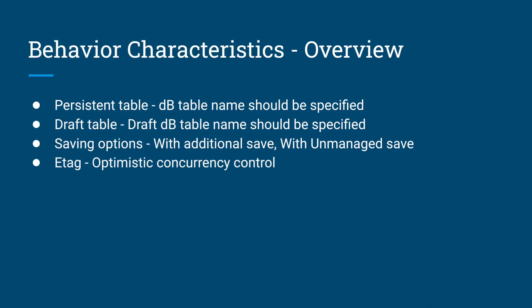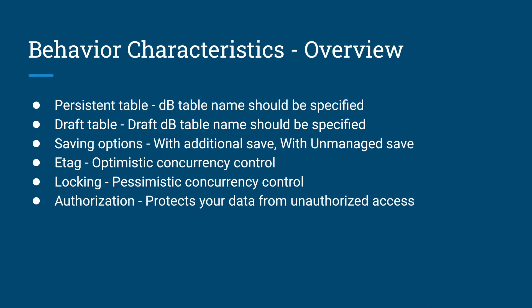ETag is an optimistic concurrency control which avoids modification of data that is being controlled by multiple users simultaneously. Locking is a pessimistic concurrency control that avoids concurrent access to database table records. With ETag, an ETag field is compared when a change request comes in — if the field matches, the change is allowed; otherwise it is rejected. With locking, if no lock exists on a record, the change is allowed; otherwise it is not. Authorization protects your data from unauthorized access.